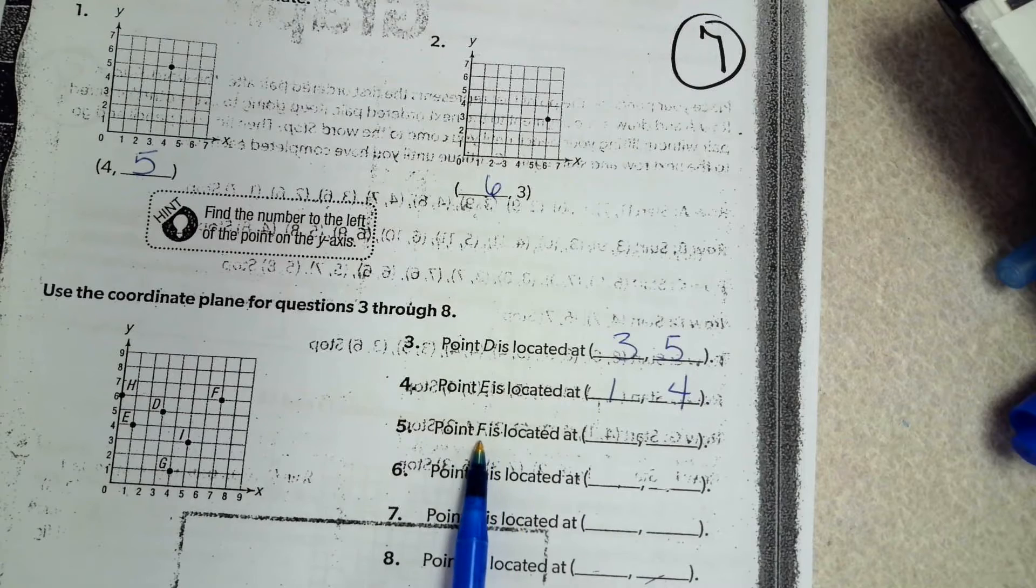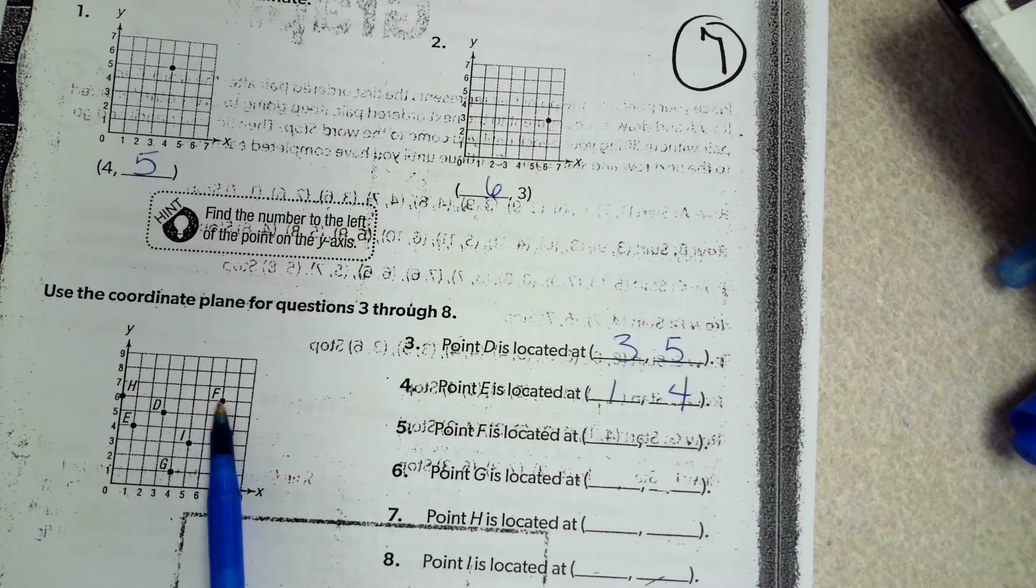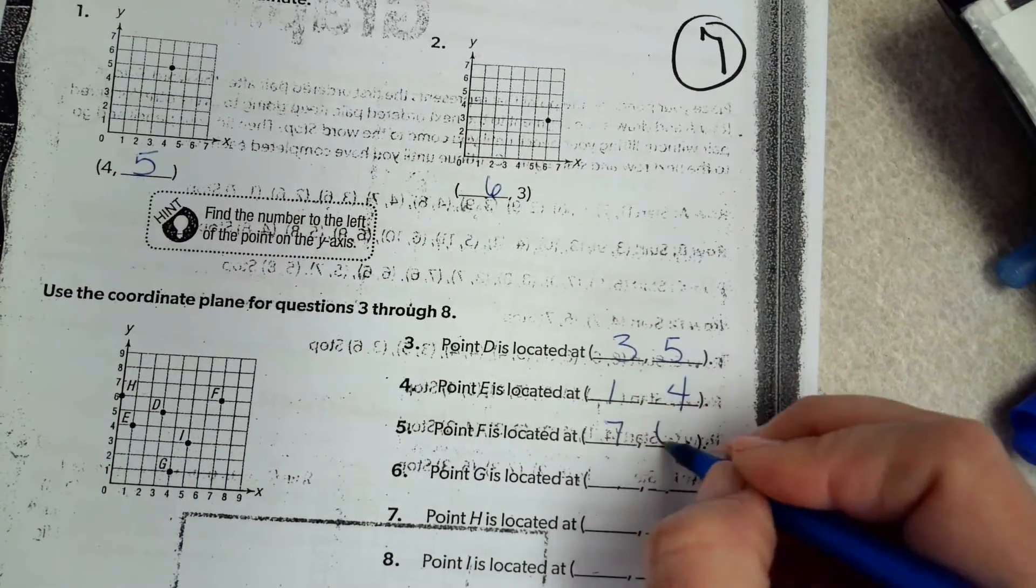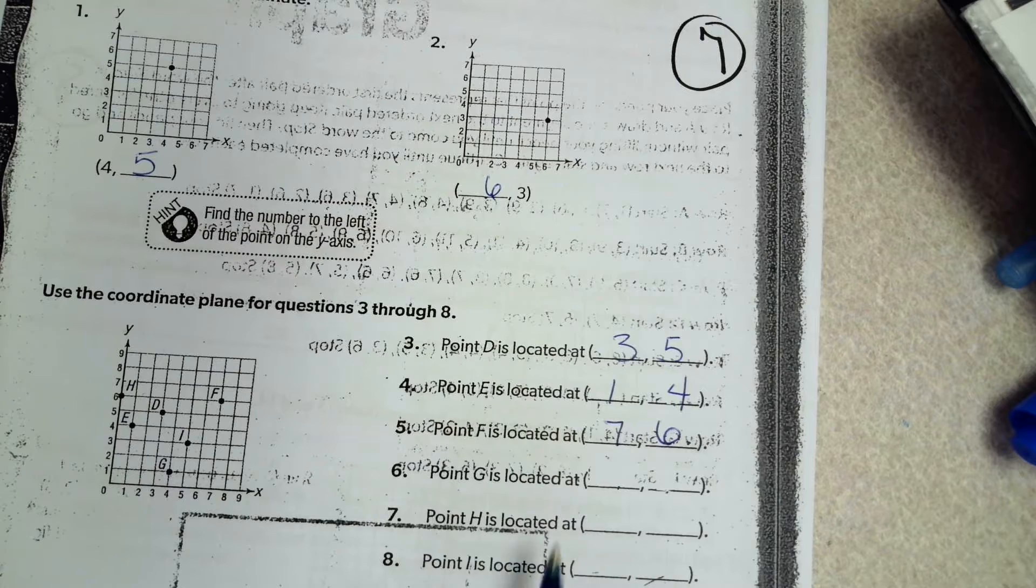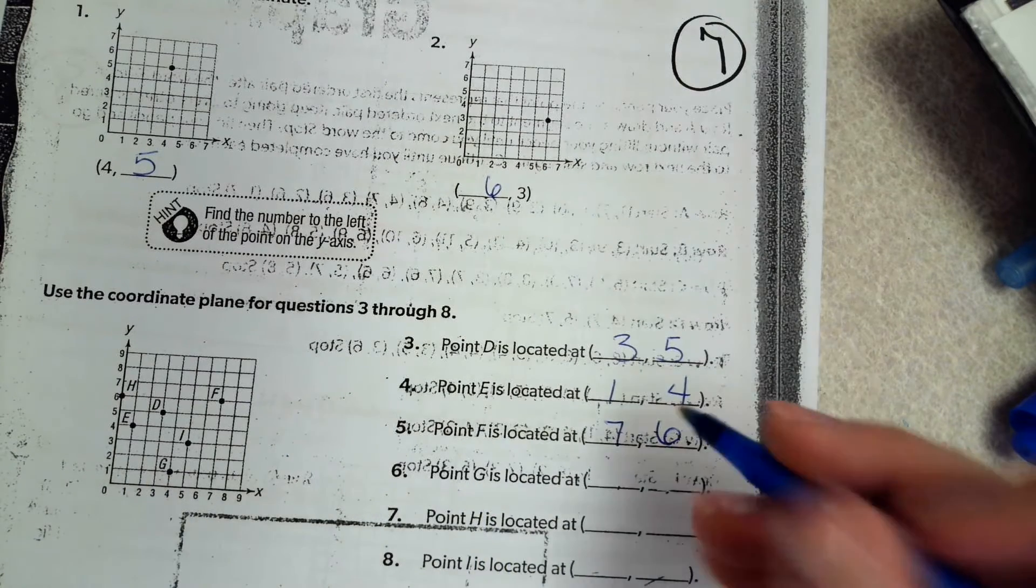F. F is over 7, up 6. G. G is over 4, up 1.